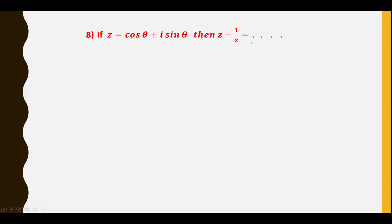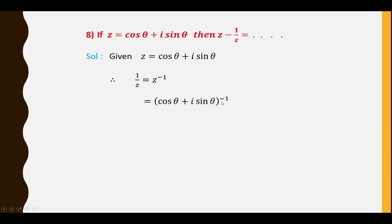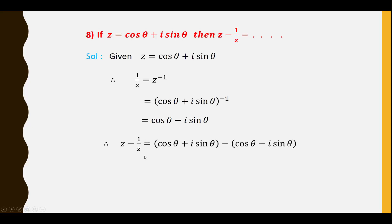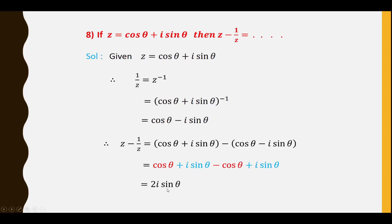Eighth question: If Z = cosθ + i sinθ, find Z − 1/Z. We have 1/Z = cosθ − i sinθ. So Z − 1/Z = (cosθ + i sinθ) − (cosθ − i sinθ). The cosθ terms cancel, leaving i sinθ + i sinθ = 2i sinθ.